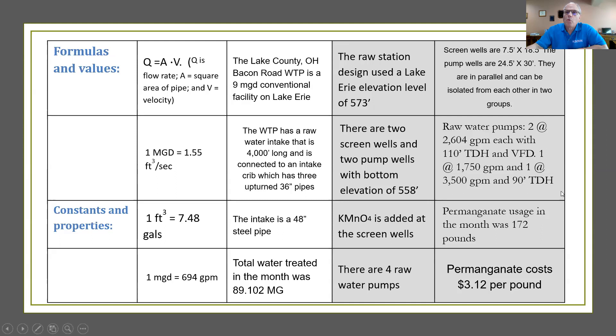Now there are four raw water pumps. Two of them are 2,604 gallons per minute each with 120 feet total dynamic head with a variable frequency drive on them. We also have two fixed speed pumps. One of them is a small pump at 1,750 gallons per minute. The other is a larger pump at 3,500 gallons per minute. Each of them has a total dynamic head rating of 90 feet. Goes on to say that permanganate usage in the month was 172 pounds and it gives you a cost of $3.12 per pound for permanganate.